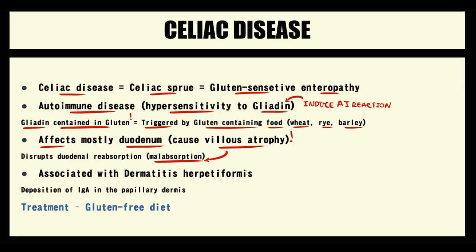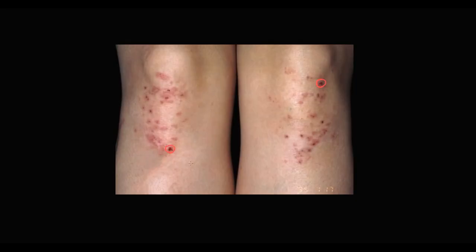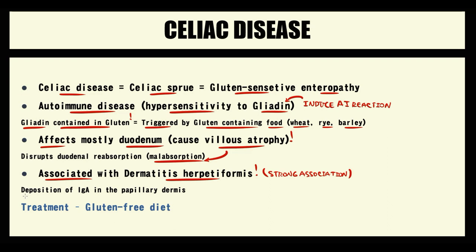An important feature of celiac disease is its strong association with a skin rash called dermatitis herpetiformis, which very frequently occurs in these patients. This rash is also provoked by antibody production — specifically, deposition of IgA in the papillary dermis causes the formation of skin lesions called dermatitis herpetiformis.